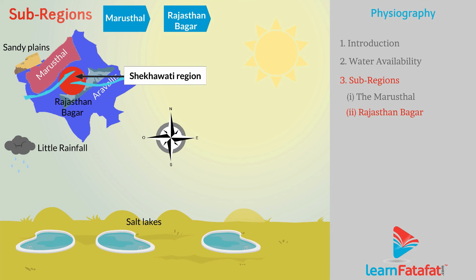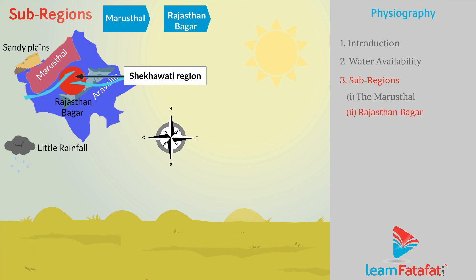Some of the salt lakes in the Shekhawati region are Degna, Sambhar, etc. The Ghaggar plain lies in the extreme north of the region. The river Ghaggar disappears in the desert.